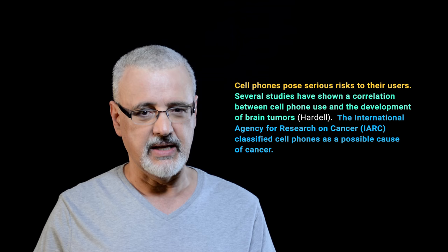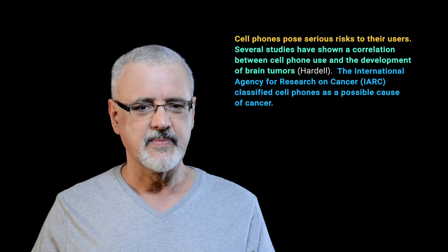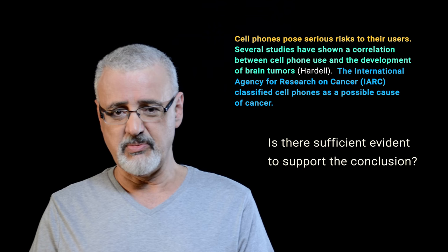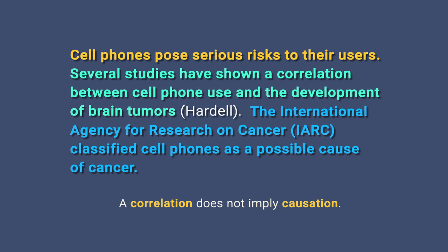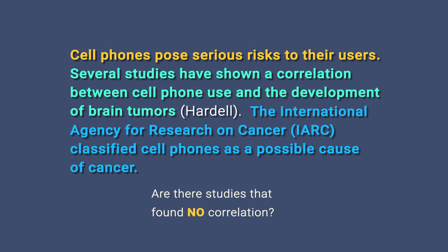Look at the premises again and ask questions. Are there problems with these premises? Is there sufficient evidence to support the conclusion? Researchers have found a correlation between cell phone use and the development of brain tumors. How good were these studies? A correlation does not mean that cell phones were the cause. Are there studies, maybe, that found no correlation? The second premise is that they classified cell phones as a possible cause of cancer — a possible cause of cancer means the evidence is not definitive. Do they make that classification based on the same studies mentioned in premise 1? If so, this premise is a bit redundant.